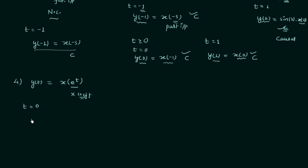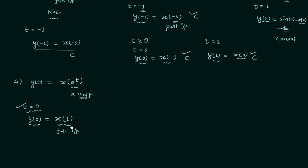Let's make t equal to 0. We get y(0) equal to x(e^0) which equals x(1). For the time instant t equal to 0, the present output y(0) is depending on x(1) which is a future input. There is no need to check other instances of time, as we have already found one instant at which the present output depends on the future input. So you can directly write down the answer as non-causal.